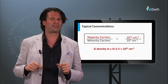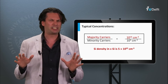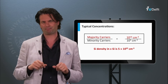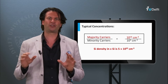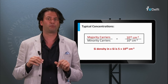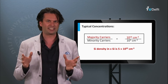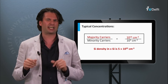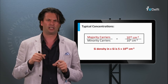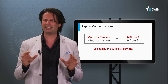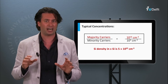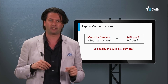Let's get a feeling for the typical concentrations for majority and minority charge carriers in doped silicon networks in the dark. Typical densities for majority charge carriers in silicon are 10 to the 16th per cubic centimeter, whereas the density of minority charge carriers in that case would be 10 to the 4th per cubic centimeter. This shows that the density of majority charge carriers can be many orders of magnitude higher than that of the minority charge carriers.